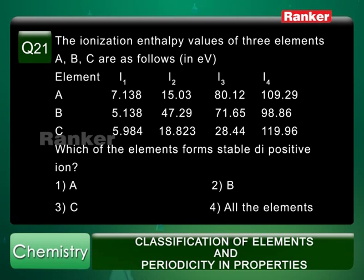Element B: I1 is 5.138, I2 is 47.29, I3 is 71.65 and I4 is 98.86.